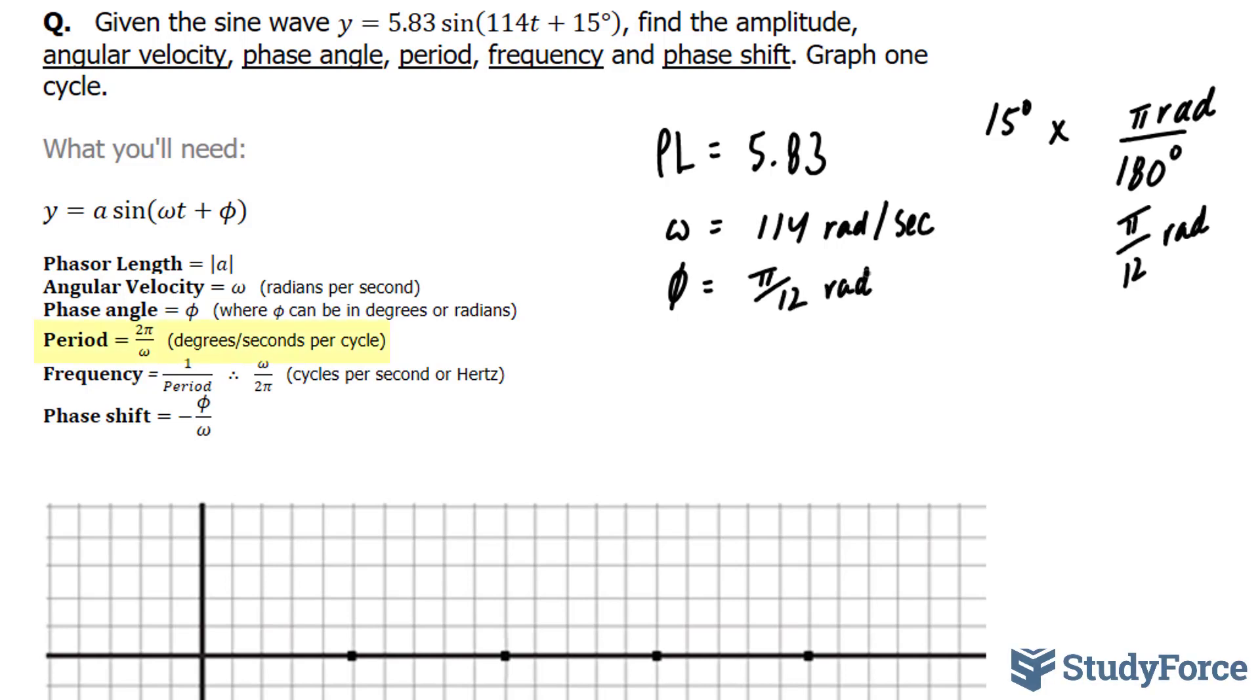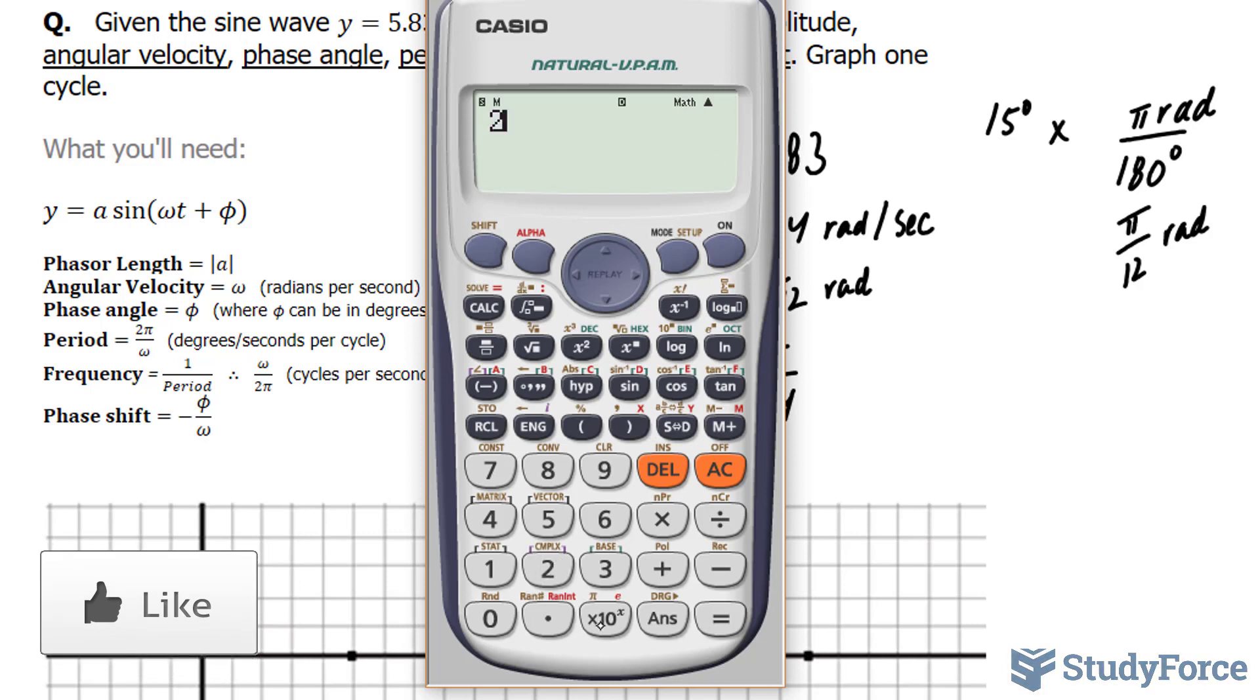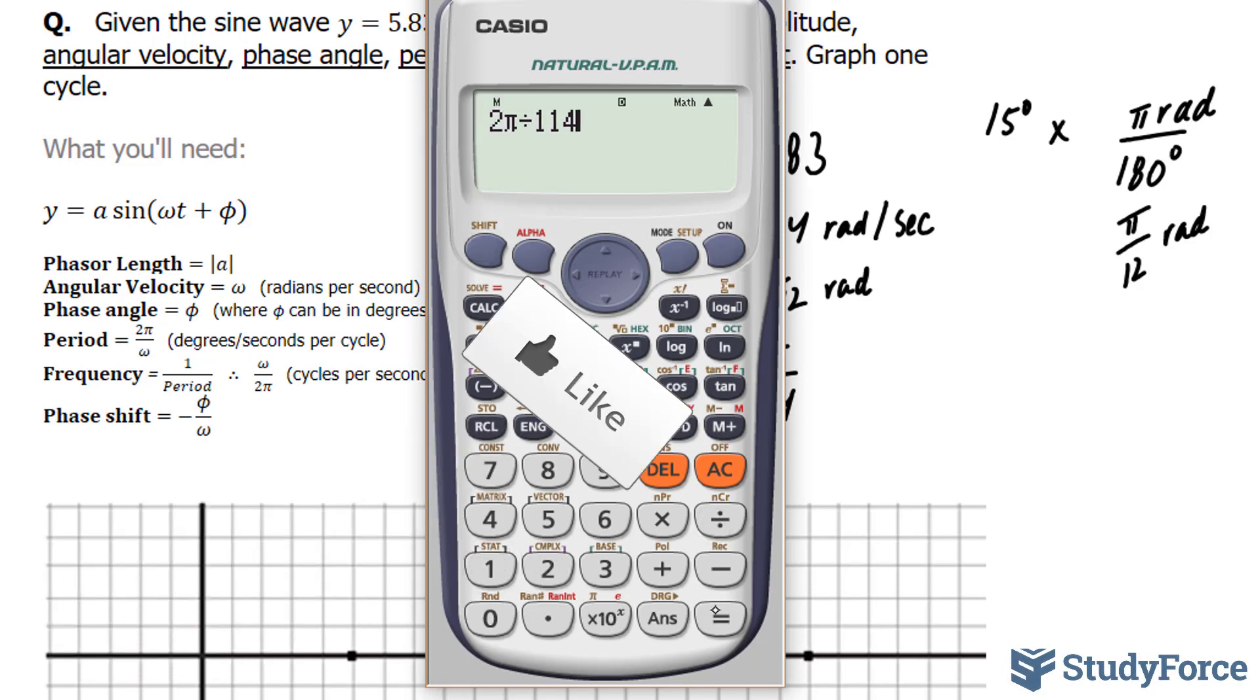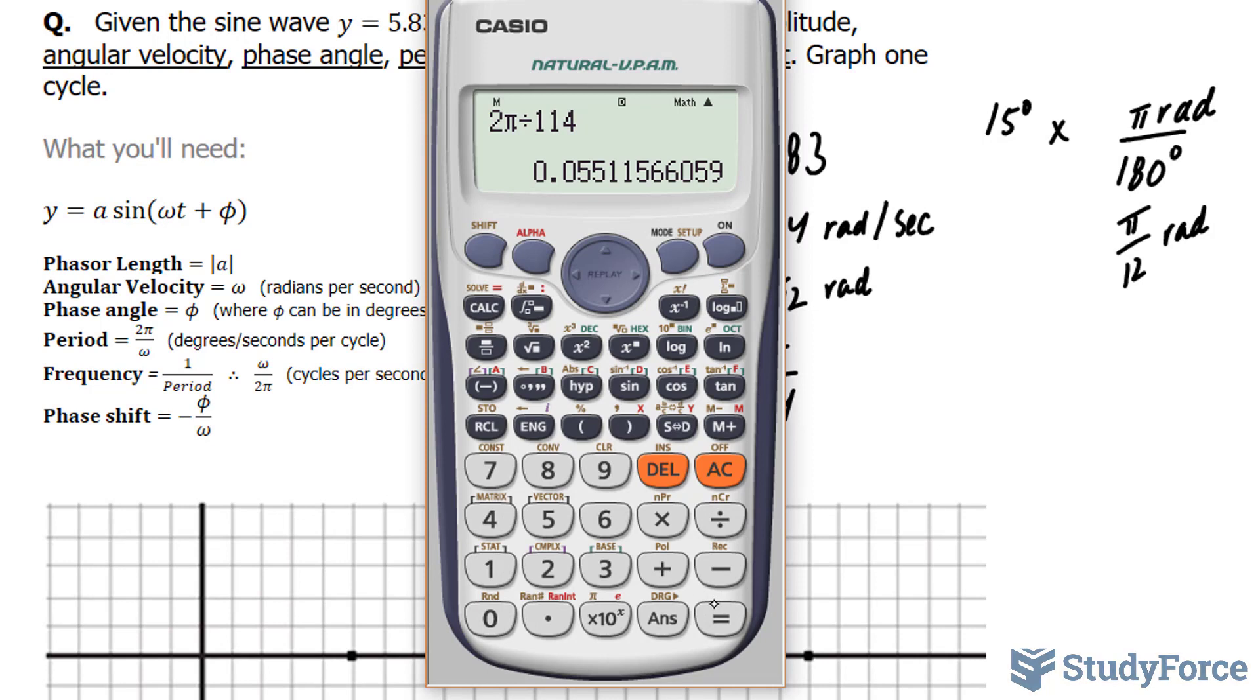Next, the period is defined as 2 pi over your angular velocity. So to do this, we'll take period is equal to 2 pi over 114, which gives us, using our calculator, 2 pi divided by 114, is 0.05511.